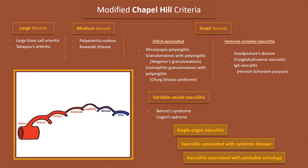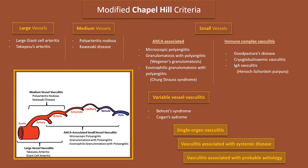This picture is a visual illustration of the vasculitis classification based on vessel size as just discussed: large vessel, medium vessel, and small vessel — including ANCA-associated and immune complex-associated small vessel vasculitis.